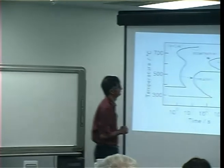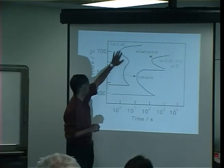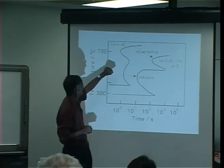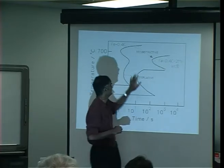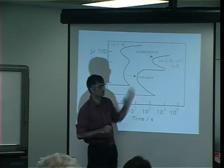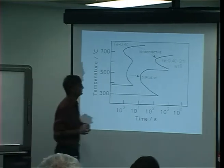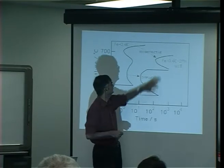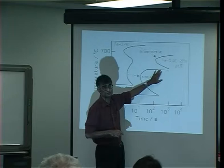This is a time-temperature transformation diagram for iron without any alloying elements other than carbon. When we add manganese you can see that it retards all the transformations. The important point is that when the reactions are slow, we can separate the time-temperature transformation diagram into two regions.